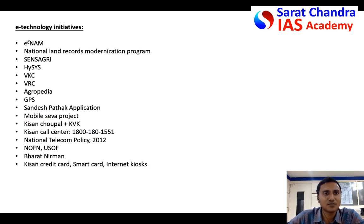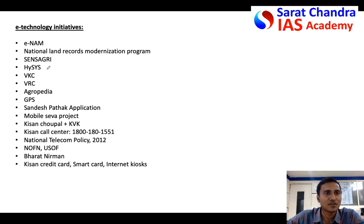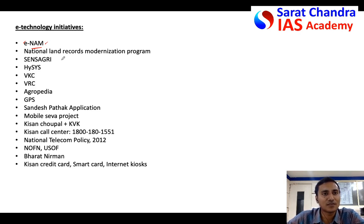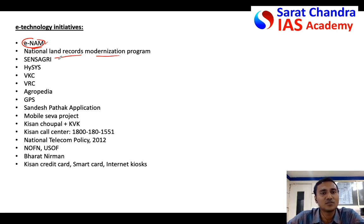There are various e-technology initiatives taken by the Government of India. Choose four or five and discuss them in three to four lines each. For example, the National Agricultural Market (eNAM) allows farmers to access end consumers and sell their products without a middleman, enabling contract farming. Similarly, if land records are modernized by the government, litigations will reduce and farmers will invest more on their land, improving productivity.